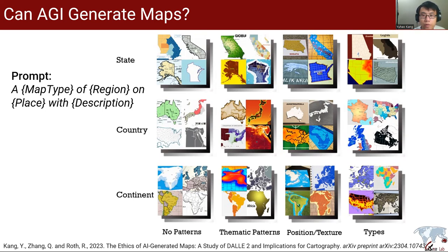Can generative AI produce maps? We made an exploration using the following prompts with DALL-E 2. As you can see, we generated some example maps in different regions with a variety of styles. These maps deliver basic geographic information, have the shapes of different regions, may have certain spatial patterns, and can be placed at different locations.